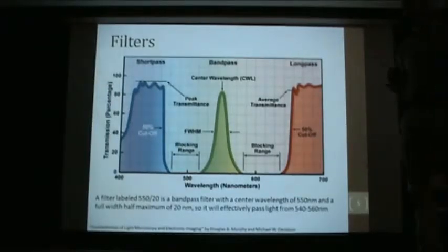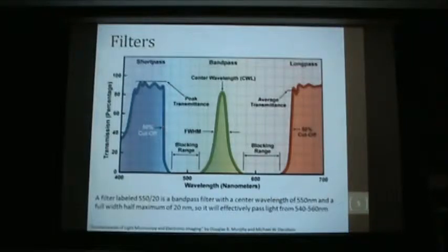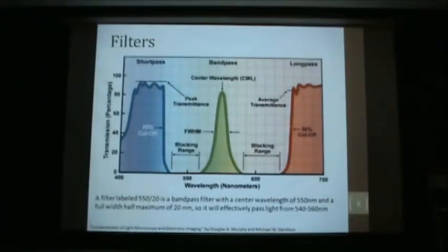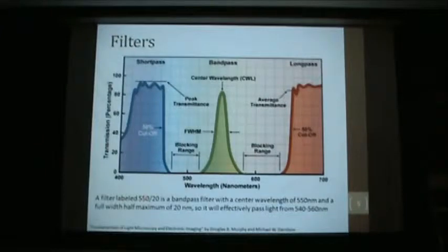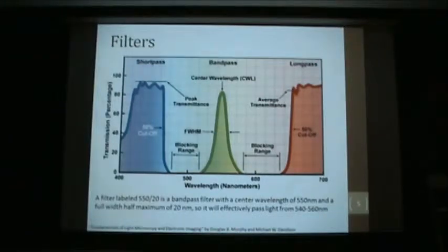There are a couple of different kinds of filters. A short-pass filter will pass all wavelengths shorter than that number — so this is probably a 450 nanometer short-pass filter, passing things 450 nanometers or less. A long-pass filter is just the opposite — it passes light at longer wavelengths, so this is a 650 nanometer long-pass filter. A band-pass filter will pass just a specific band. The nomenclature is the center wavelength and the full-width half-maximum. So a 550/20 filter passes light from 540 to 560 nanometers.